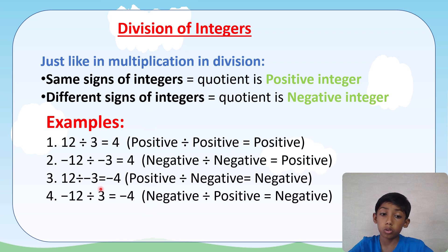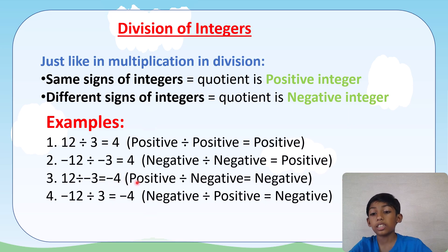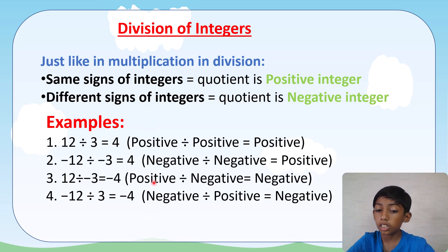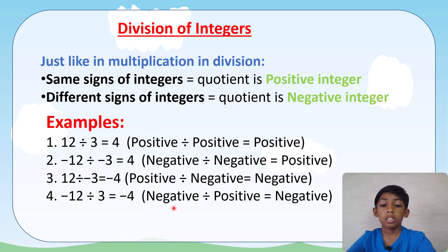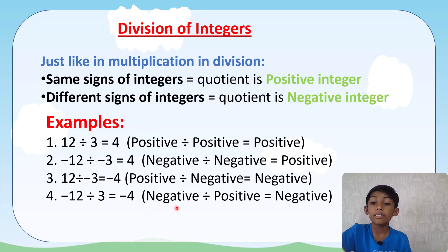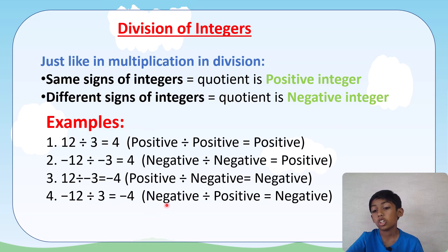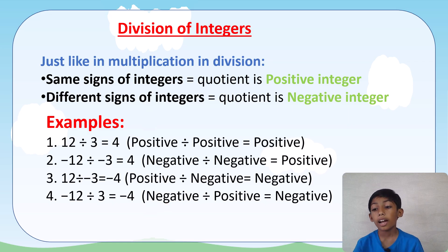Then 12 ÷ (−3) = −4: a positive integer divided by a negative integer equals a negative number. And (−12) ÷ 3 = −4: a negative integer divided by a positive integer equals a negative integer. I hope you understood the concept well and do not have any trouble with dividing and multiplying integers.